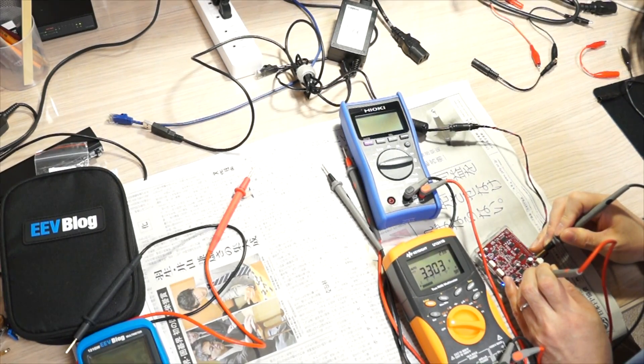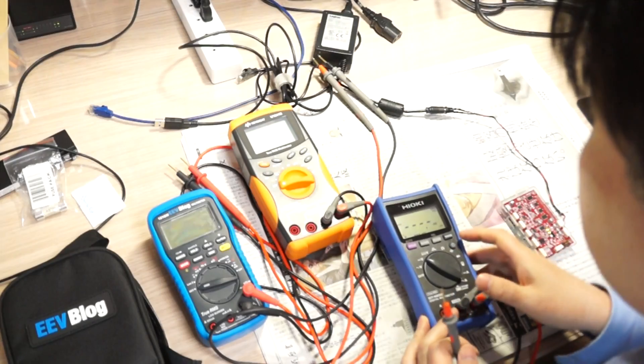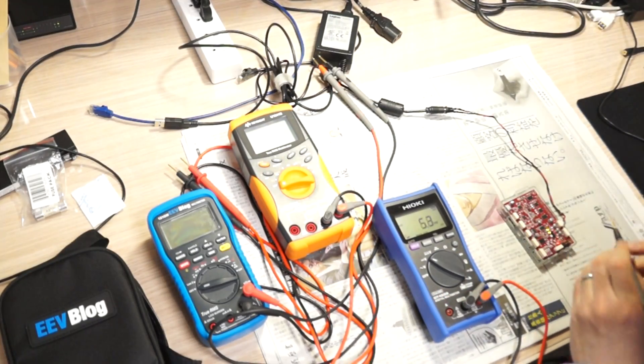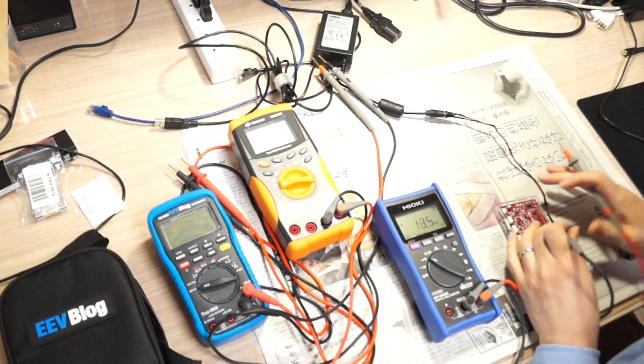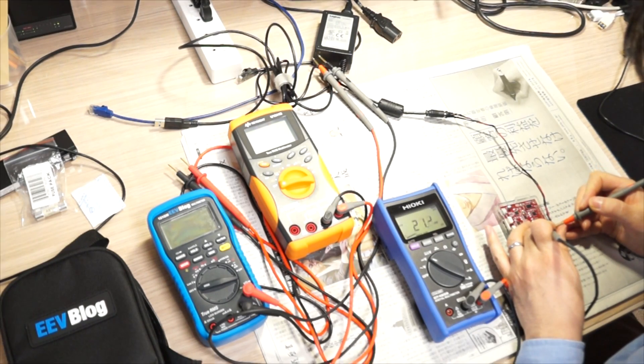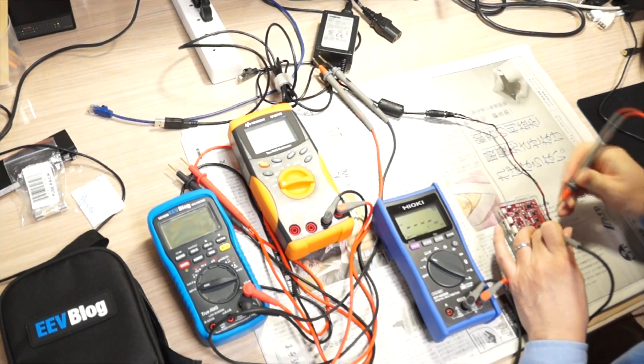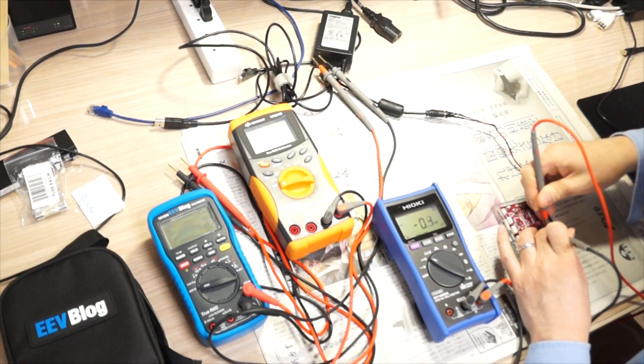Then I will do the same with the Hioki. Voltage DC volt, then starting from 12 volt. Hioki beeps when it takes the first voltage measurement. 11.91. Try again, 11.91. Okay. And next is 5 volt rail.